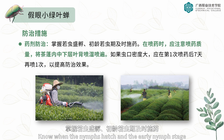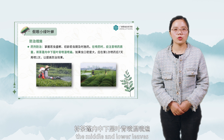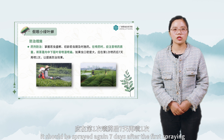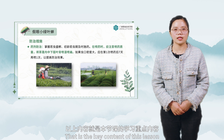Fourth, chemical prevention and control: note when nymphs hatch and target the early nymph stage. When spraying, ensure the middle and lower leaves of the tea canopy and the undersides of leaves are all covered. If population density is high, spray again seven days after the first spraying to improve control effect. That is the key content of this lesson. Thank you for watching and learning — see you next time.